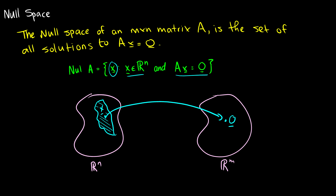Here's an example computation question about null spaces. Is the vector u = (5, -3, 2) in the null space of A, where A is equal to this matrix? The null space is the set of vectors such that Au equals zero, so we just have to check that Au equals zero.